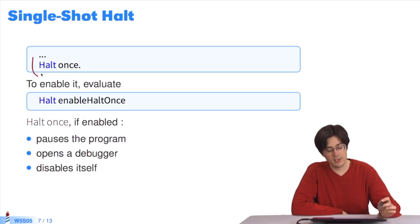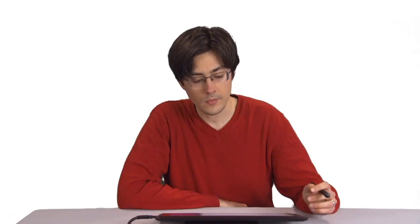So we write HALT ONCE anywhere in the code. We activate it once. We execute the program. A debugger opens and HALT ONCE is immediately disabled.